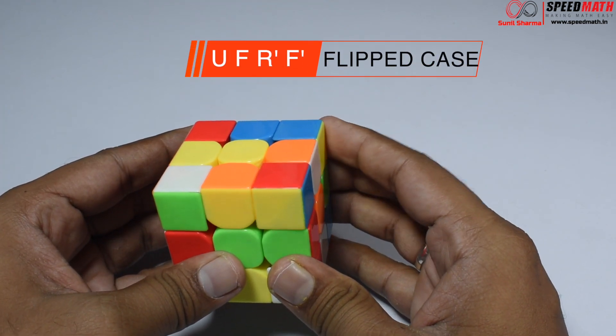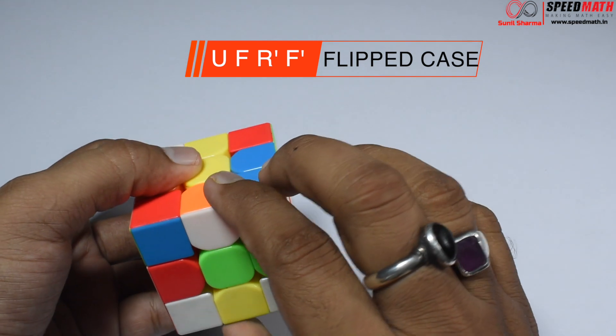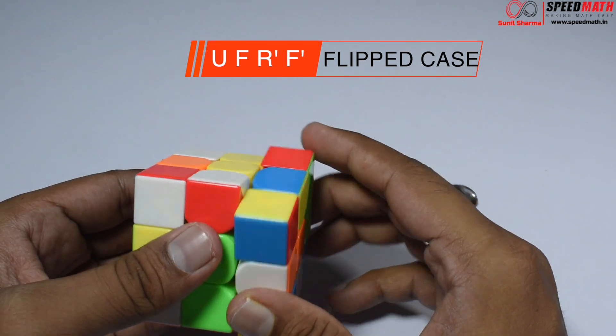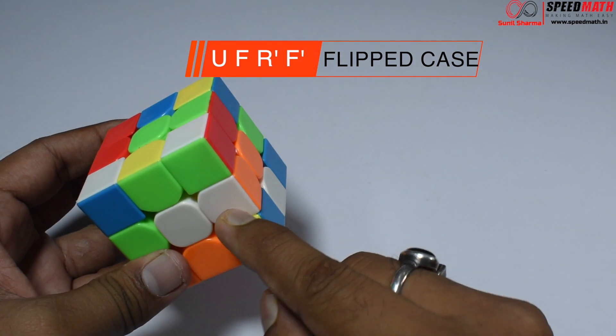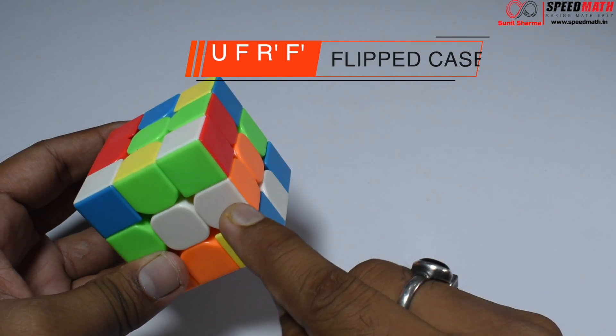Whenever you get a flip case, this is the algorithm: U F R I F I. See, that edge piece which was flipped is now properly aligned.